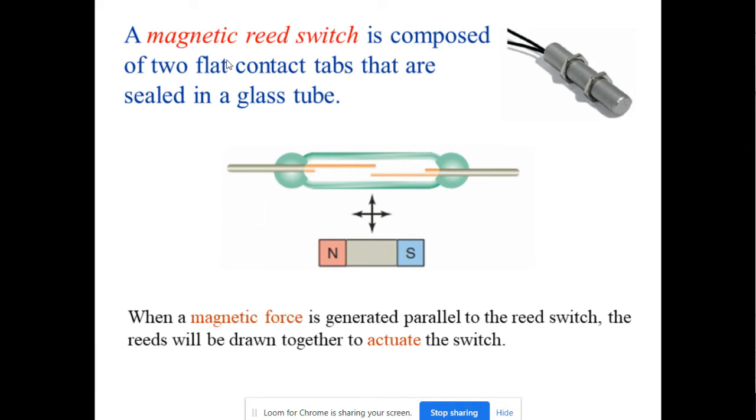The other one is the magnetic reed switch, which is composed of two flat contact types. They are sealed by a glass tube. When a magnetic force is generated parallel to the reed switch, the reed will be drawn together to actuate the switch.